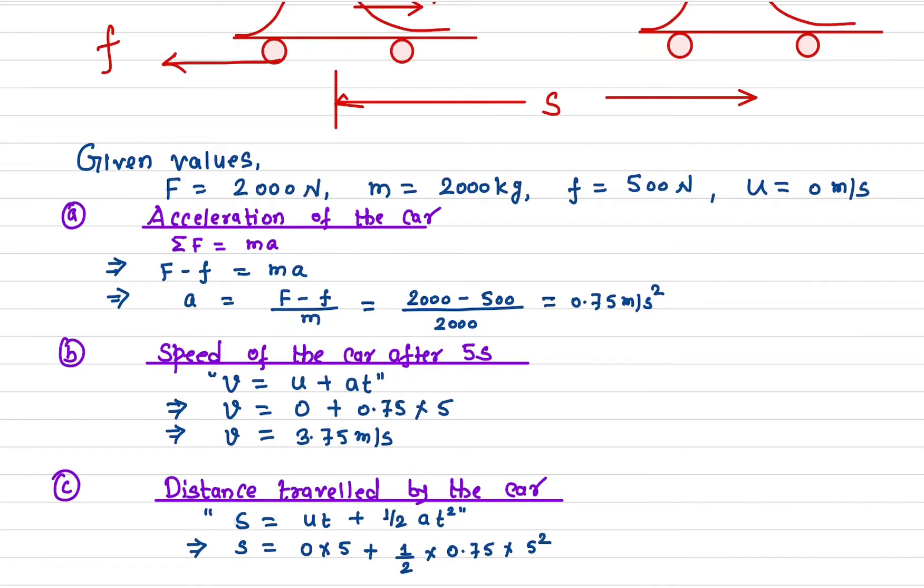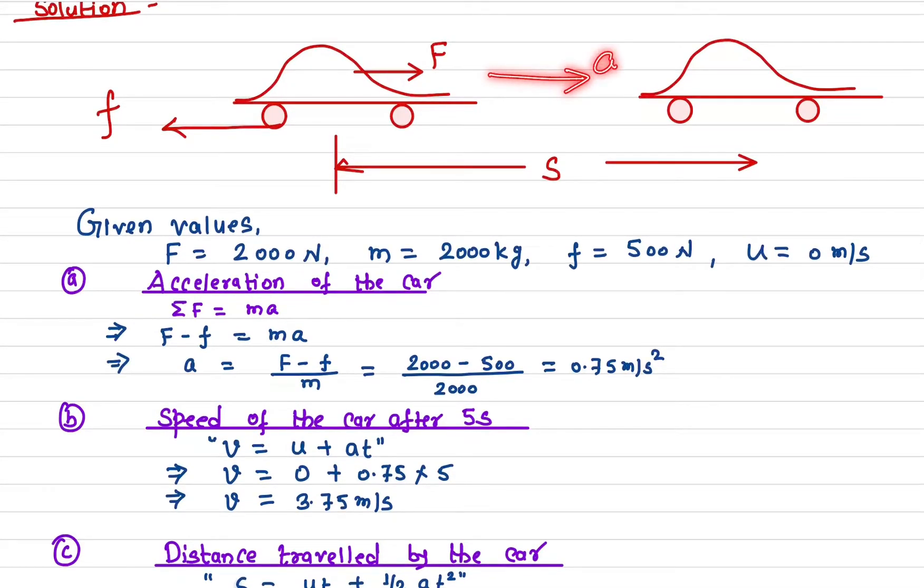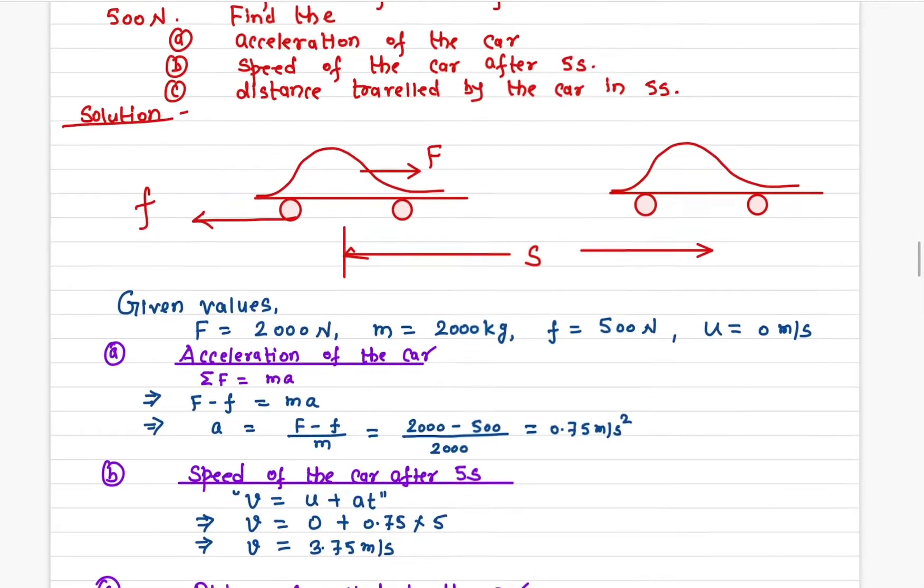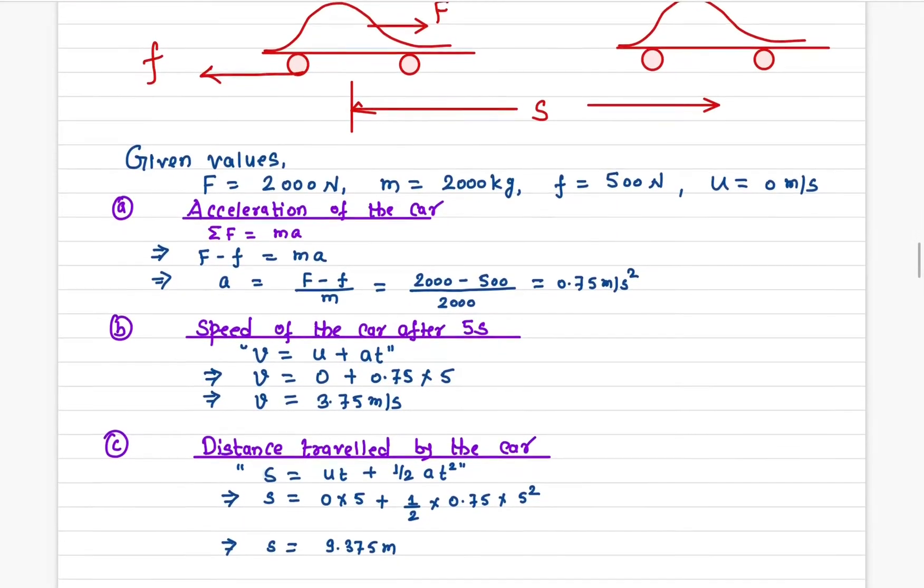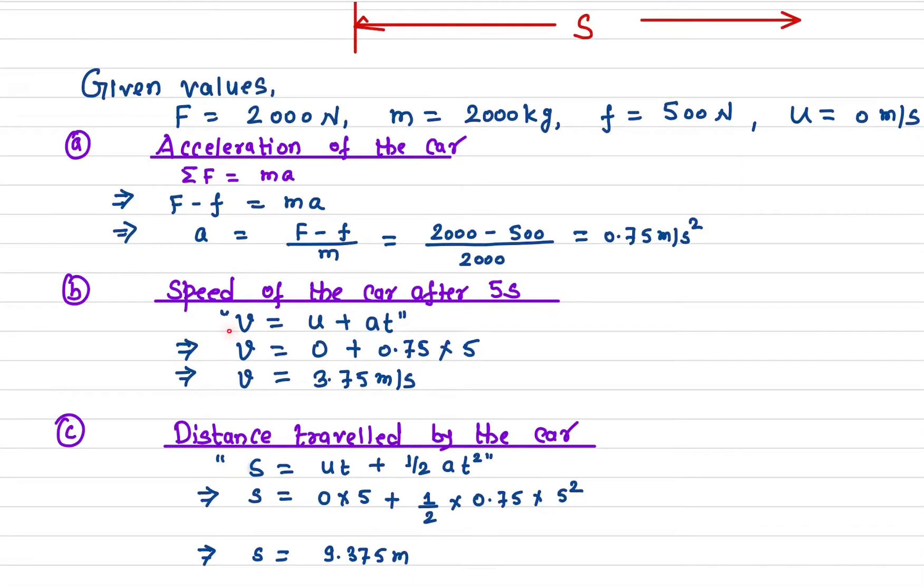Now let's find out the speed of the car after five seconds. We know the kinematic equation v equals u plus at. The v is the final speed, u is the initial speed, a is the acceleration, and t is the time. We need to find out v, and u is 0.